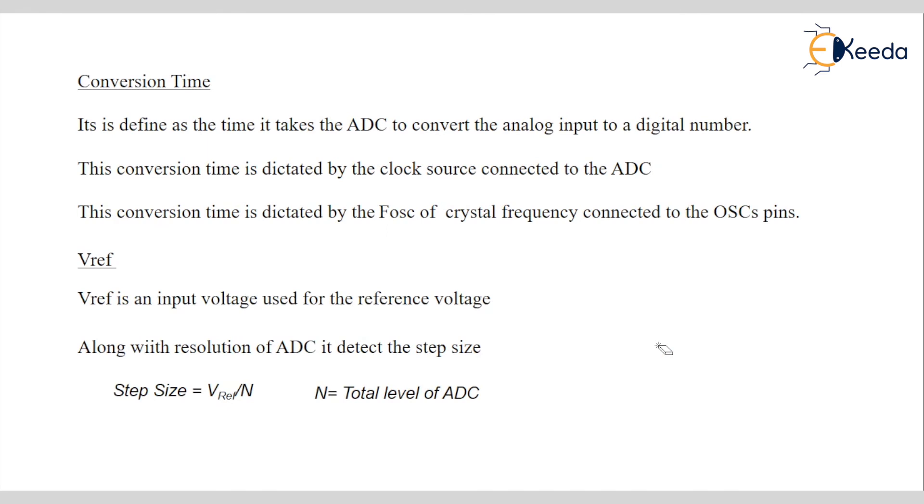Then, conversion time. In simple word, we can say conversion time is time taken by ADC to convert analog value into digital value. This conversion time is dedicated by clock source connected to ADC. So, ADC configuration also has their own SFS. We can configure our ADC. So, they are also having their control registers. So, in that control registers, we can assign clock source.